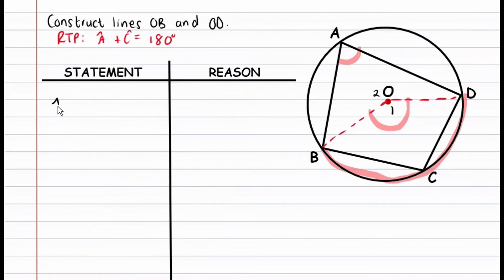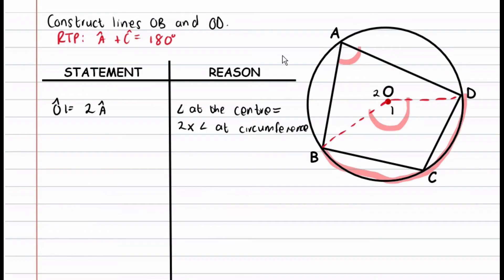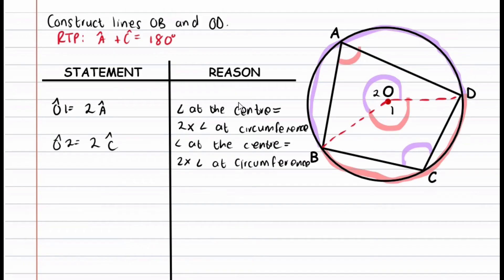So we write: angle O1 equals 2 times angle A. Likewise, angle O2 is twice the size of angle C because they are supported by the same arc — so angle O2 equals 2 times angle C, for the same reason. Now, looking at angles O1 and O2 at the center, these two angles add up to 360 degrees because they are angles around point O. So angle O1 plus angle O2 equals 360 degrees.